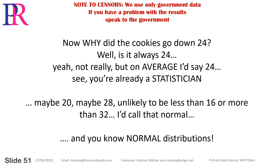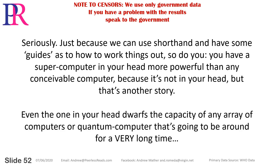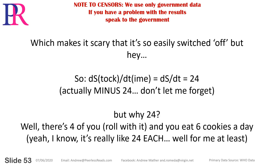DS by DT equals minus 24. But why 24? Well, is it always 24? Not really — but on average I'd say 24. Maybe 20, maybe 28. Unlikely to be less than 16 or more than 32 — I'd call that normal. And you know normal distributions. You have a supercomputer in your head more powerful than any conceivable computer. Which makes it scary that it's so easily switched off. So: delta stock — change in stock — over delta time — change in time — DS by DT equals 24. Actually minus 24, but don't let me forget. But why 24? There's four of you, and you eat six cookies a day.